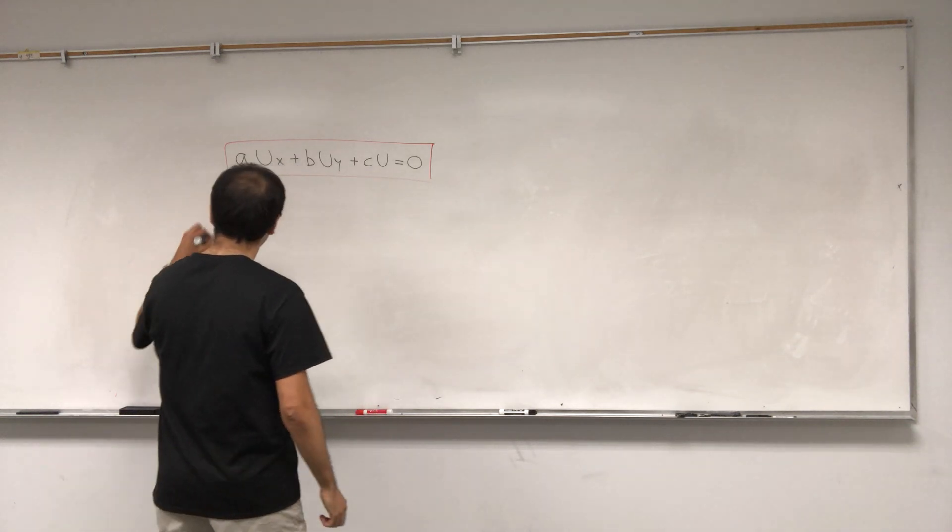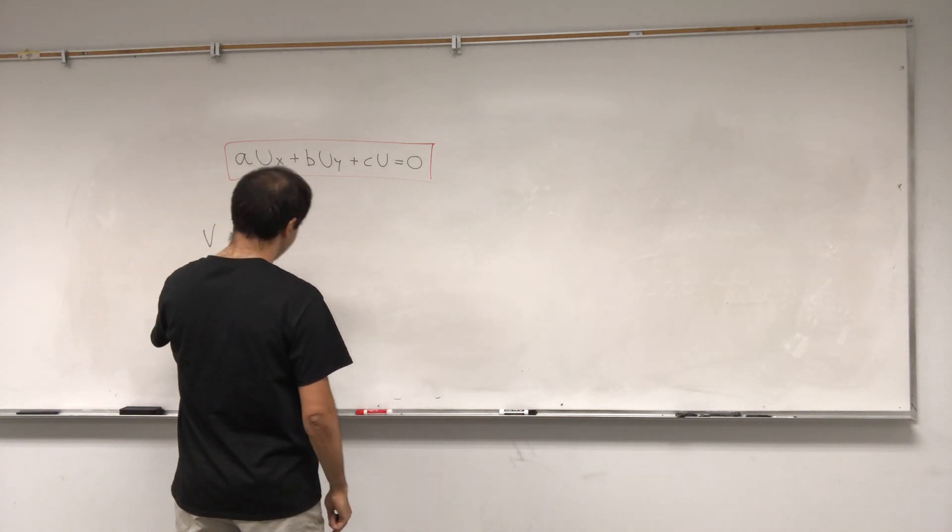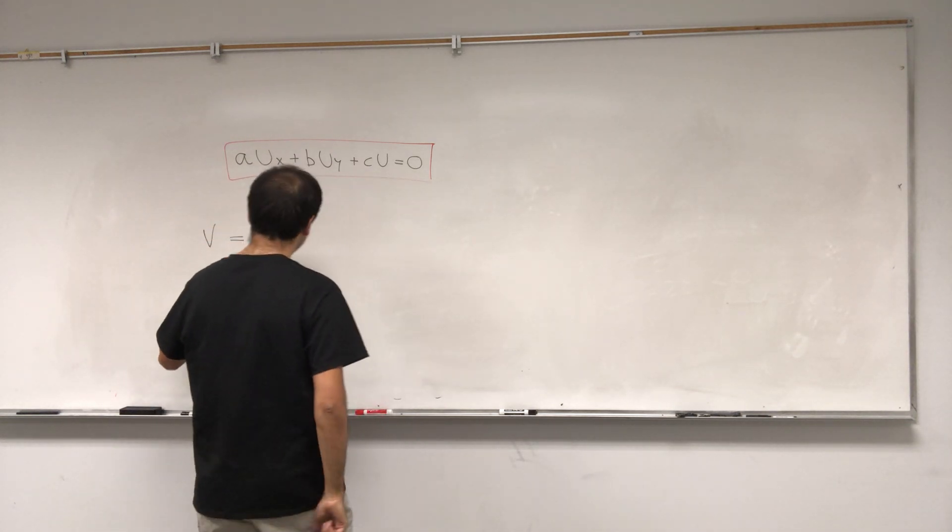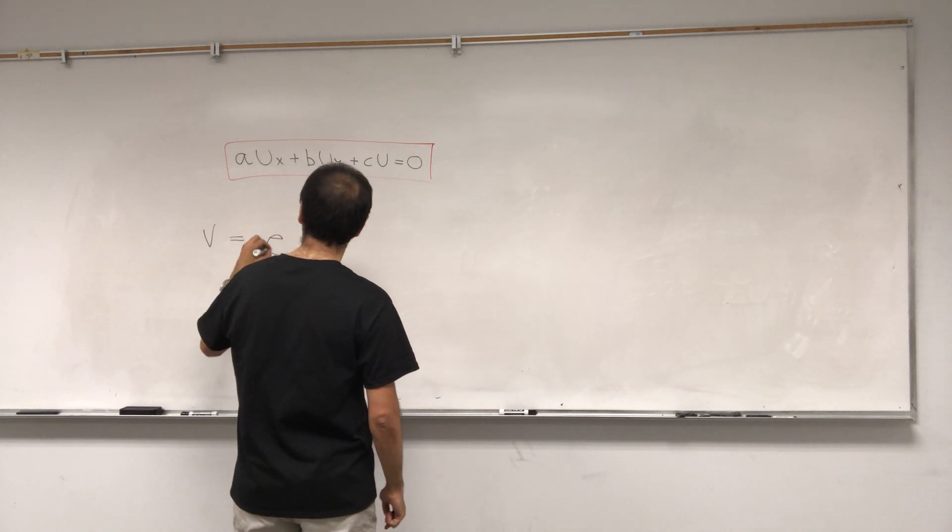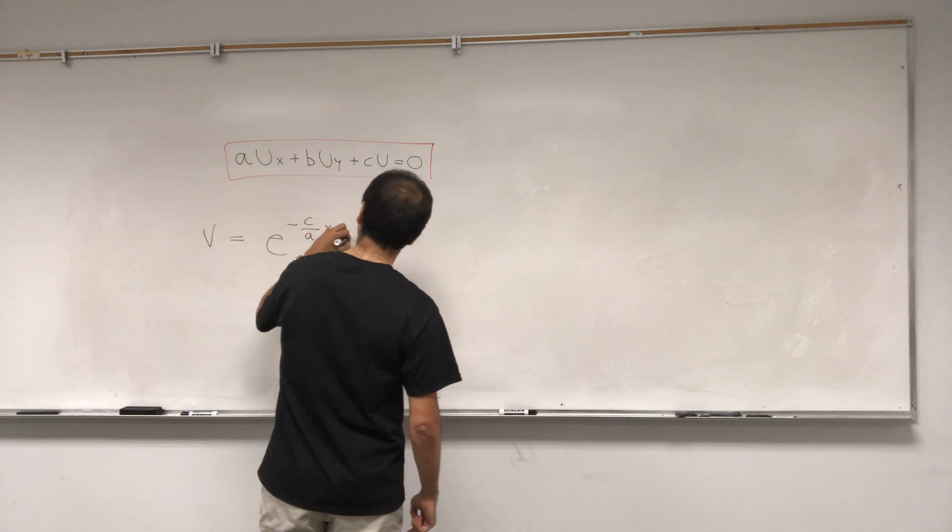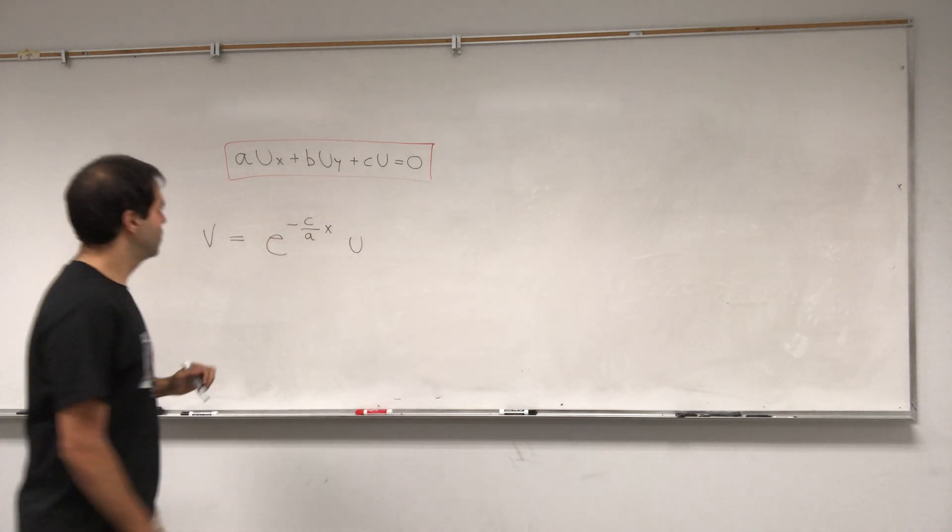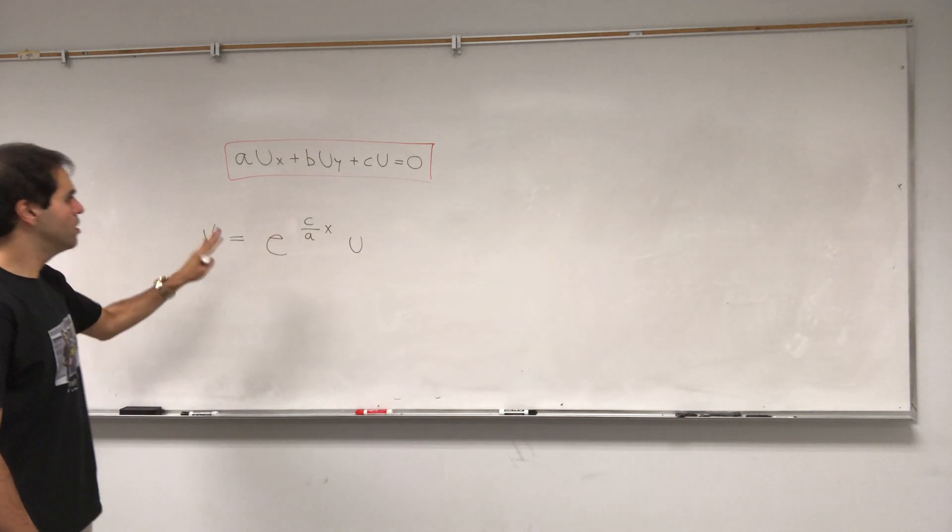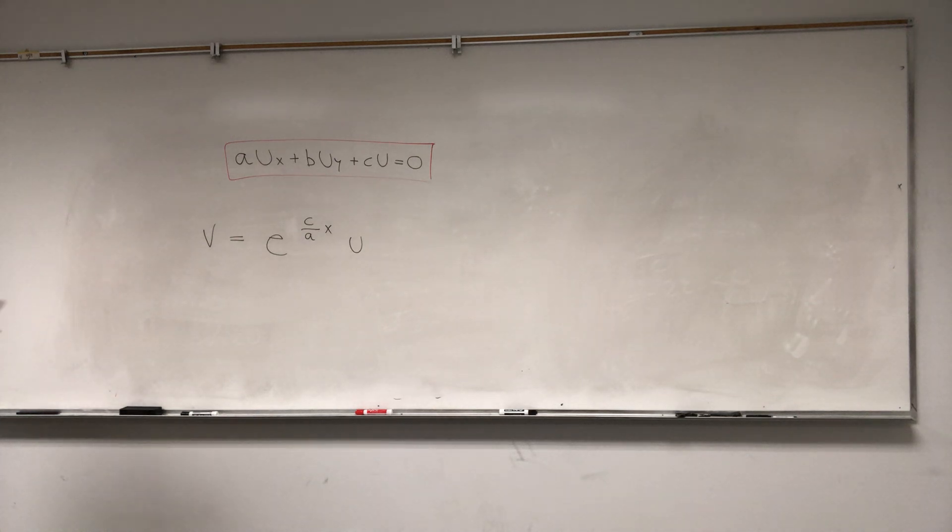So how about, and again, I might be wrong about this, let me, just one second, I think it's this E of minus C over AX. Oh, maybe not that, let me try that. So V is E to the C over AX.